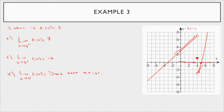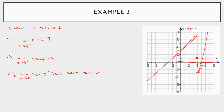This is an interesting one — the function is defined when x is equal to 4, but the limit as x goes to 4 does not exist. That's why you have to look at the graph and see where the limit looks like it's going. I hope these three additional examples really helped.